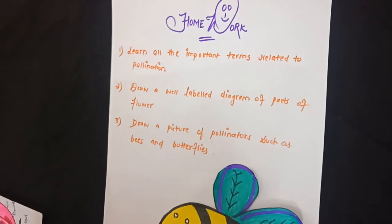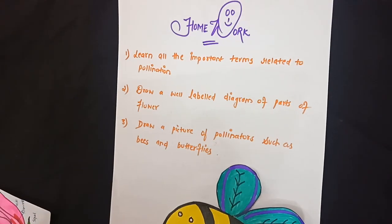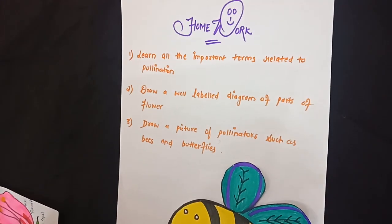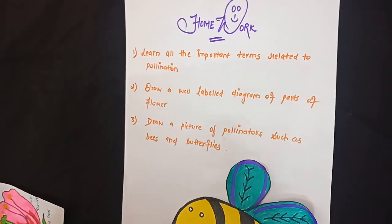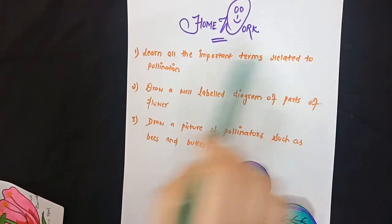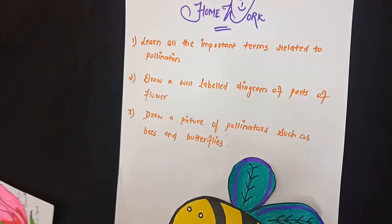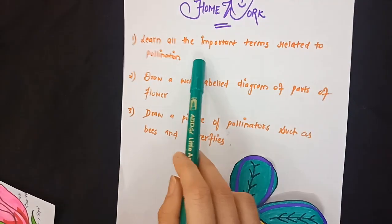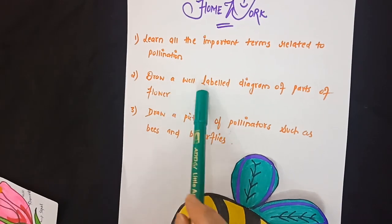Remember, pollination is very important because it leads to the production of fruits and seeds for humans and for animals. Now here is your homework. Number one: learn all the important terms related to pollination. Number two: draw a well-labeled diagram of the parts of a flower.